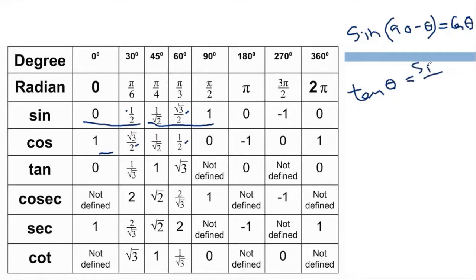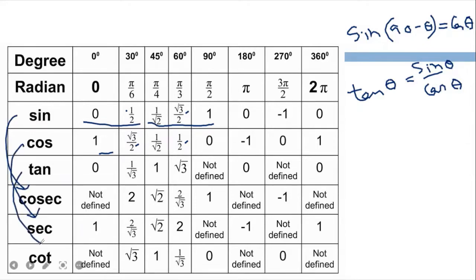Now, the ratio of sin theta divided by cos theta gives us tan theta. So here, sin value divided by cos value is called the tangent. Sin plus cos gives the tangent — this is very easy to remember.